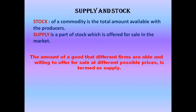Now let us see the definition of supply. The amount of a good that different firms are able and willing to offer for sale at different possible prices is termed as supply. 'Able and willing' is important — the producer should be able to produce and should be willing to offer for sale. If a producer always keeps stock, they may be able but not willing. So 'able and willing to offer for sale at different possible prices' is key in the definition.